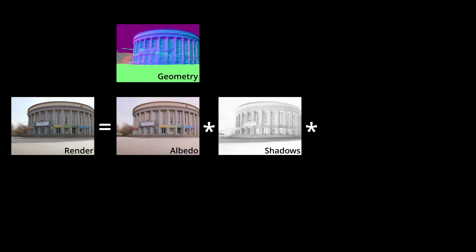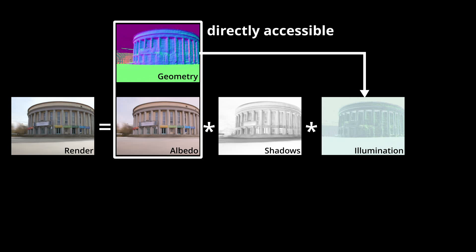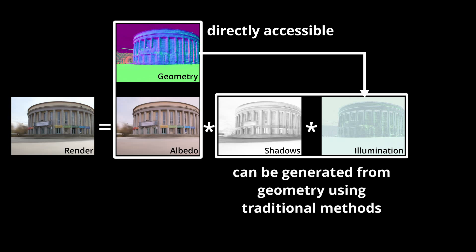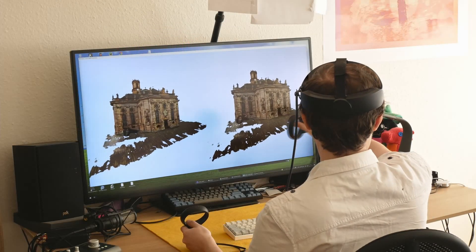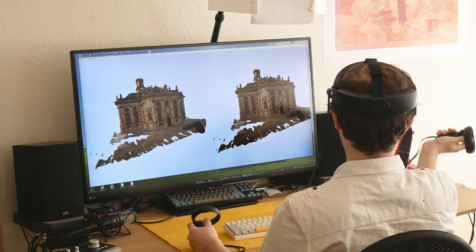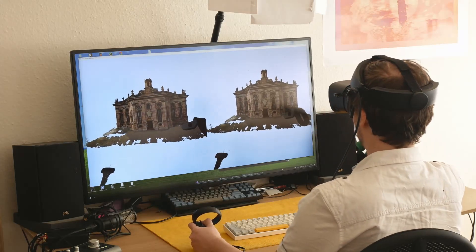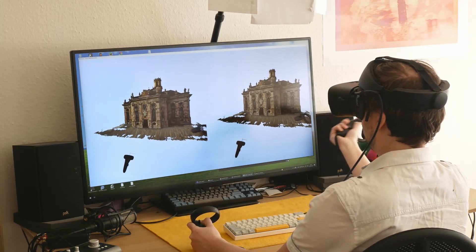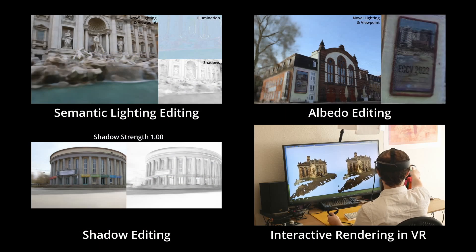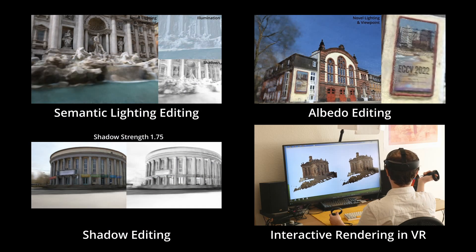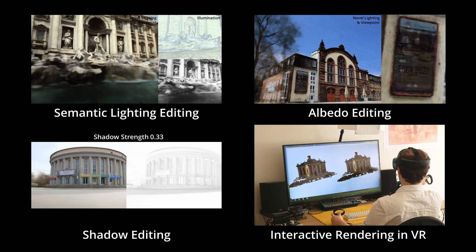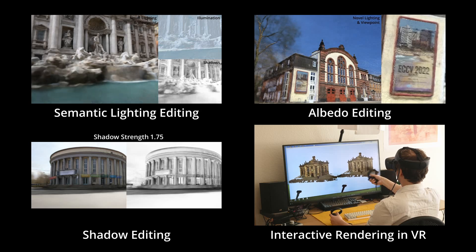Also, in contrast to style-based methods, our rendering is an explicit function of geometry, albedo, shadow, and the lighting conditions. Our model provides direct access to albedo and geometry, and the lighting and shadows can be generated from geometry using traditional methods. Hence, we can extract, render, and relight the mesh and albedo interactively in VR. All such applications are not possible by any means with style-based methods such as Nerf in the Wild, as they do not perform image decomposition.